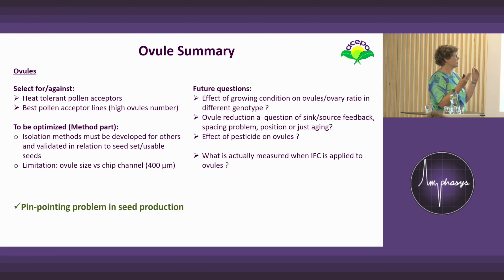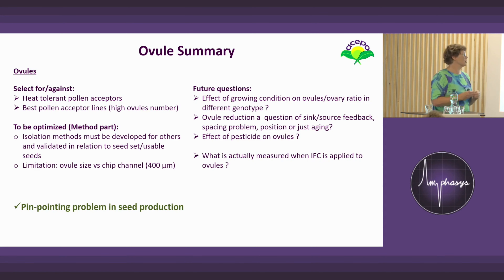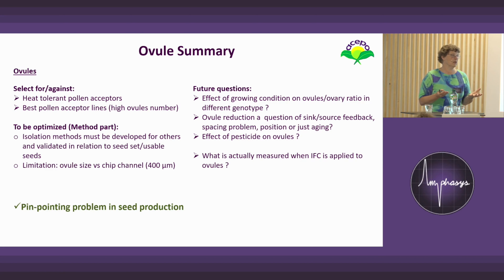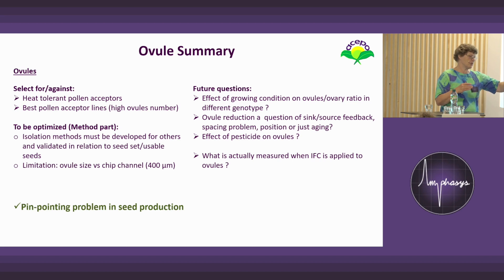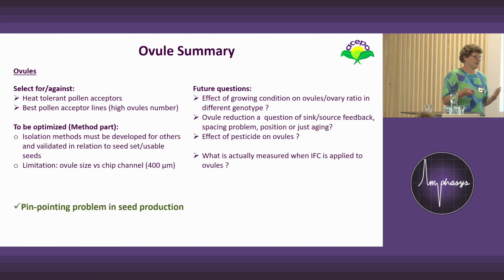Future questions include: what is the effect of growing conditions on ovule viability across different genotypes? There is the sink-source question, spacing problems are mentioned in the literature, flower position, and simply plant aging. I also don't know about pesticide effects on ovules specifically, but in my gynogenesis protocol for double haploid production, when aphids appeared and people sprayed a systemic substance, my DH production dropped to zero within a week — so something is probably going on there. What is actually being measured when I send ovules through the machine would need mutants in ovule development to answer properly.